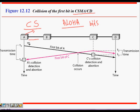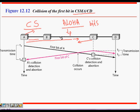Carrier Sense still has a problem. When you transmit bits, it takes time for them to travel. If A transmits a frame and the bits have only moved partway when C senses the channel, C will find the channel idle and start transmitting. C's bits will then collide with A's bits. Carrier sensing helps, but there is still a chance of collision because signals take time to travel, even at the speed of light.